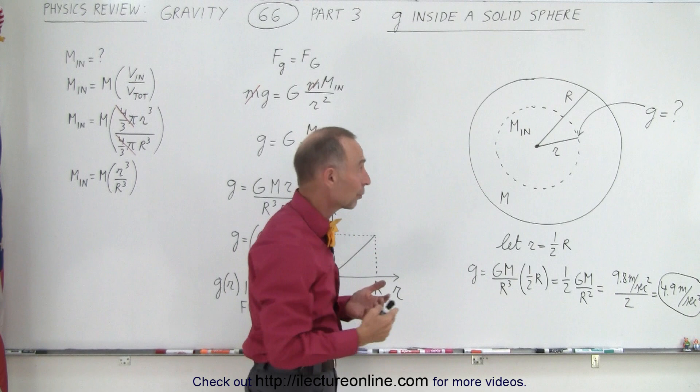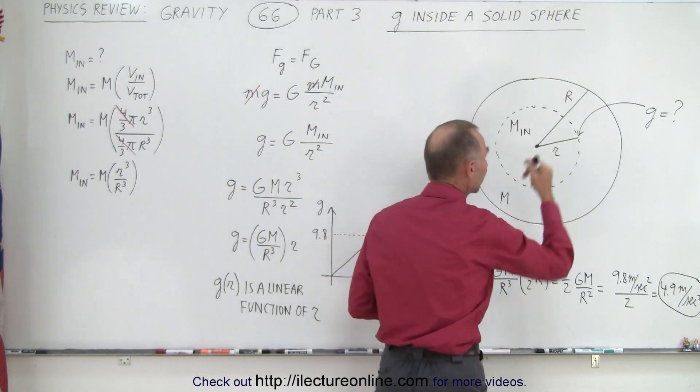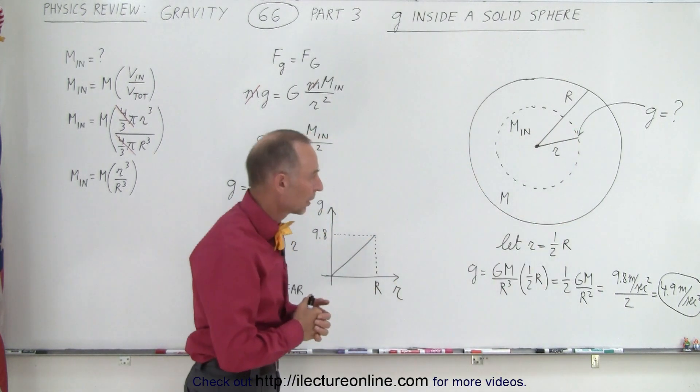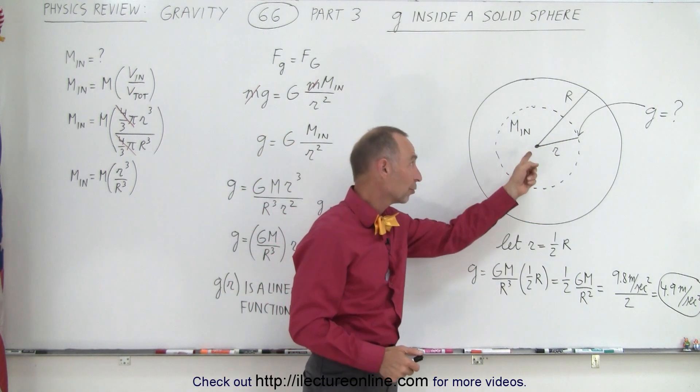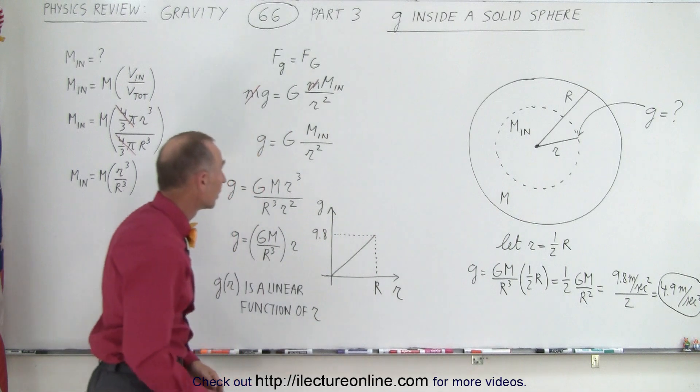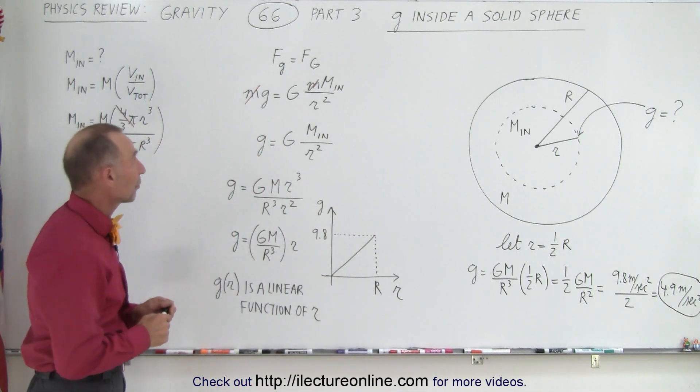And so what would be the acceleration due to gravity? And what would be the force of gravity at that location? So we're going to do an example where, let's say, r is halfway down from the surface down to the center. Now the way to attack that is as follows.